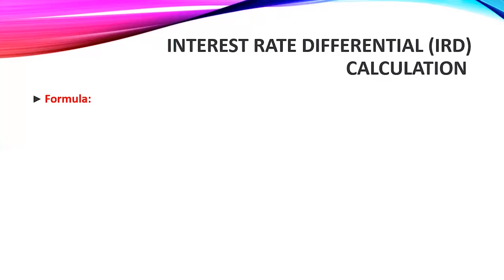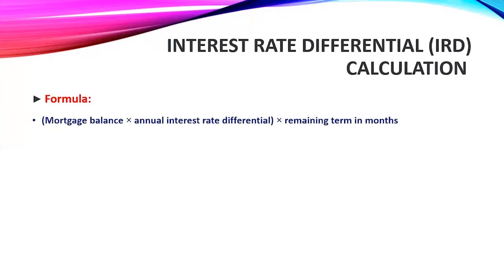For the interest rate differential (IRD) calculation, the formula is: take the mortgage balance and multiply it by the annual interest rate differential. This means we take the previous interest rate and subtract the current interest rate. In this case, 5.5% was the previous rate and 3.5% is the current rate, so 5.5 minus 3.5 gives us 2%. Then we take that and multiply by the remaining term.